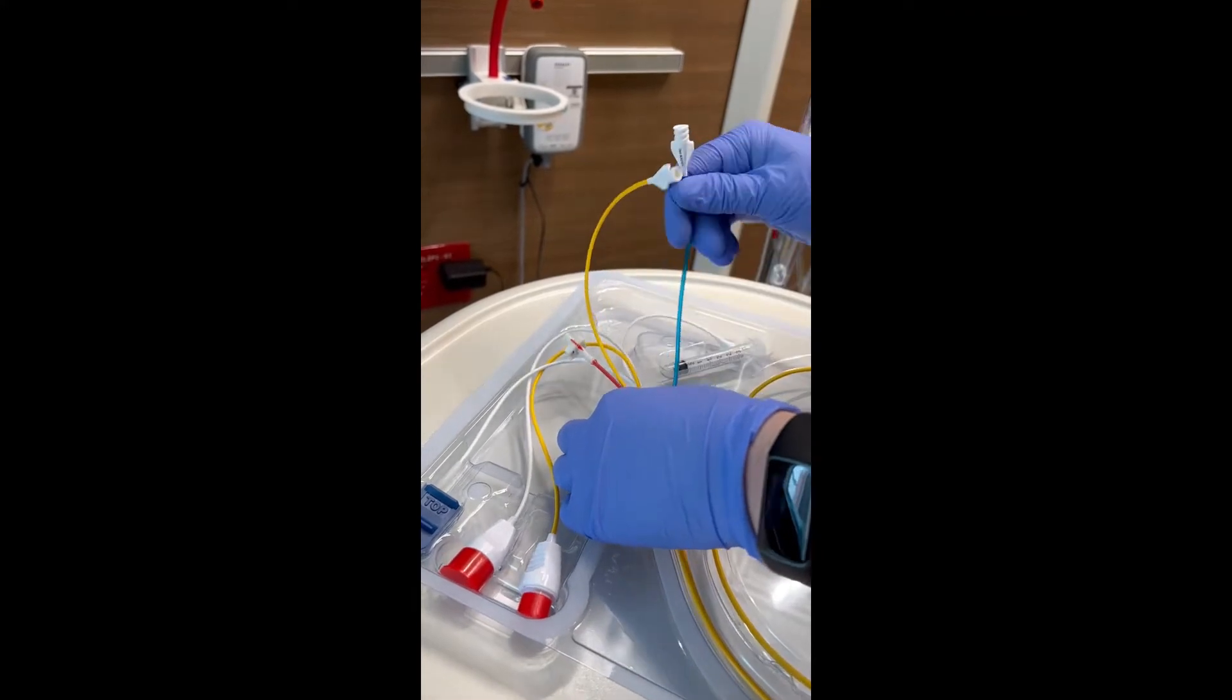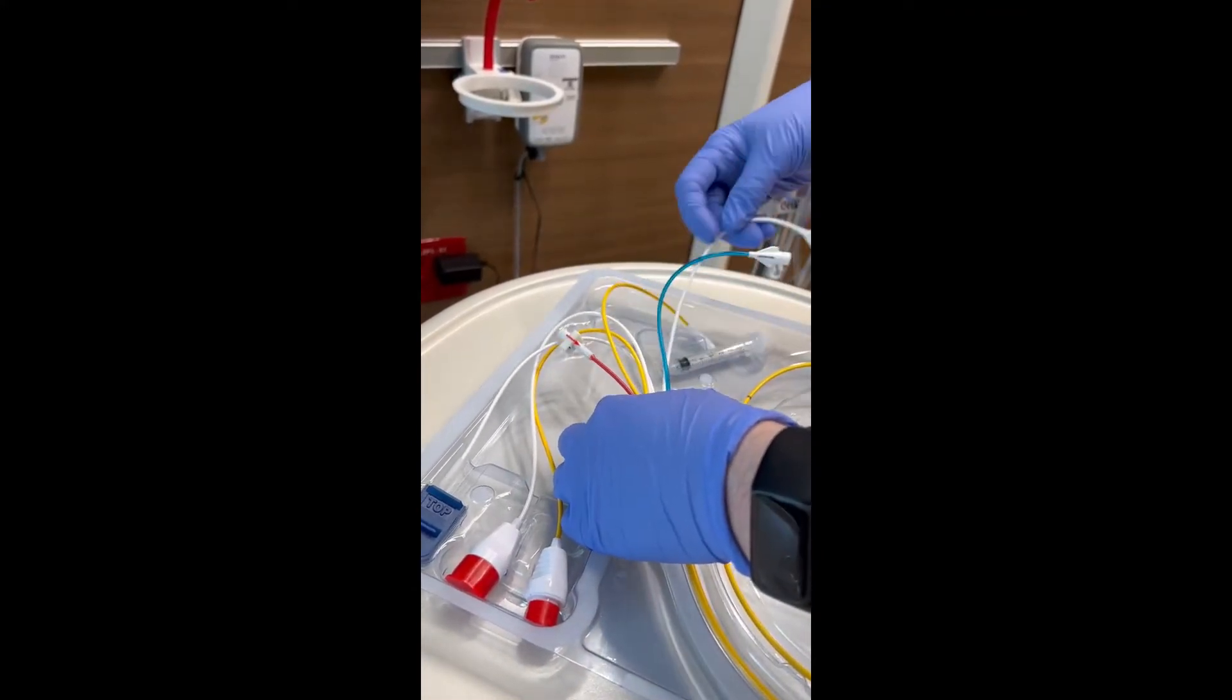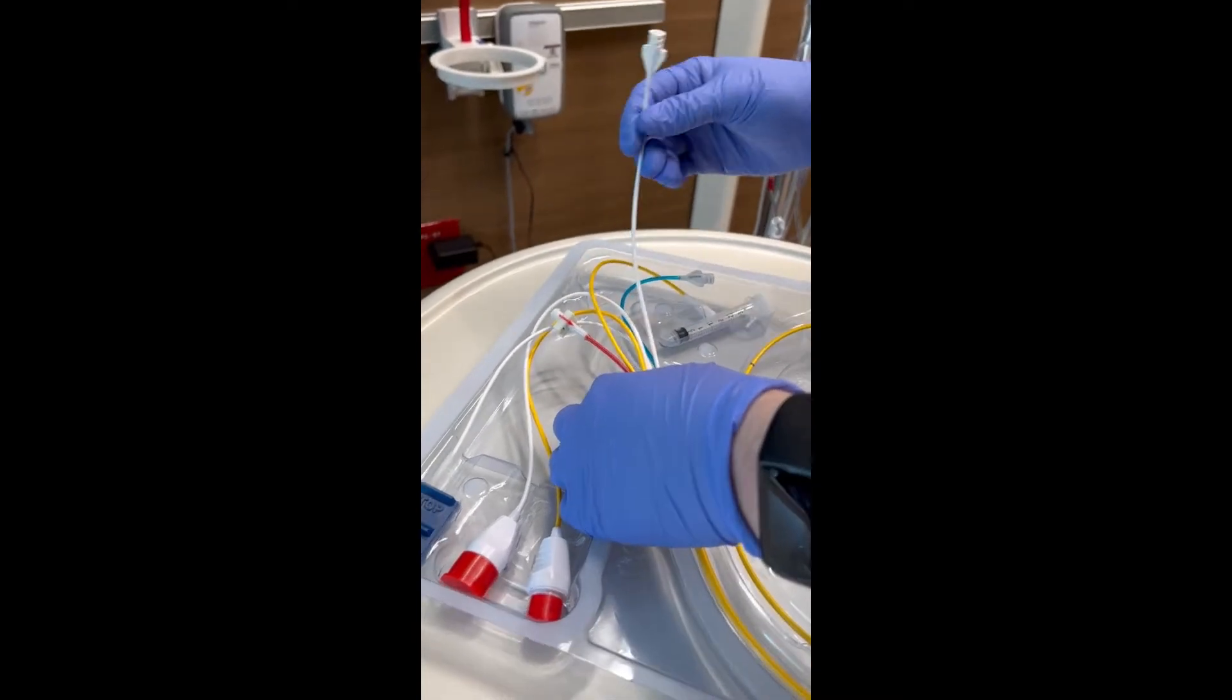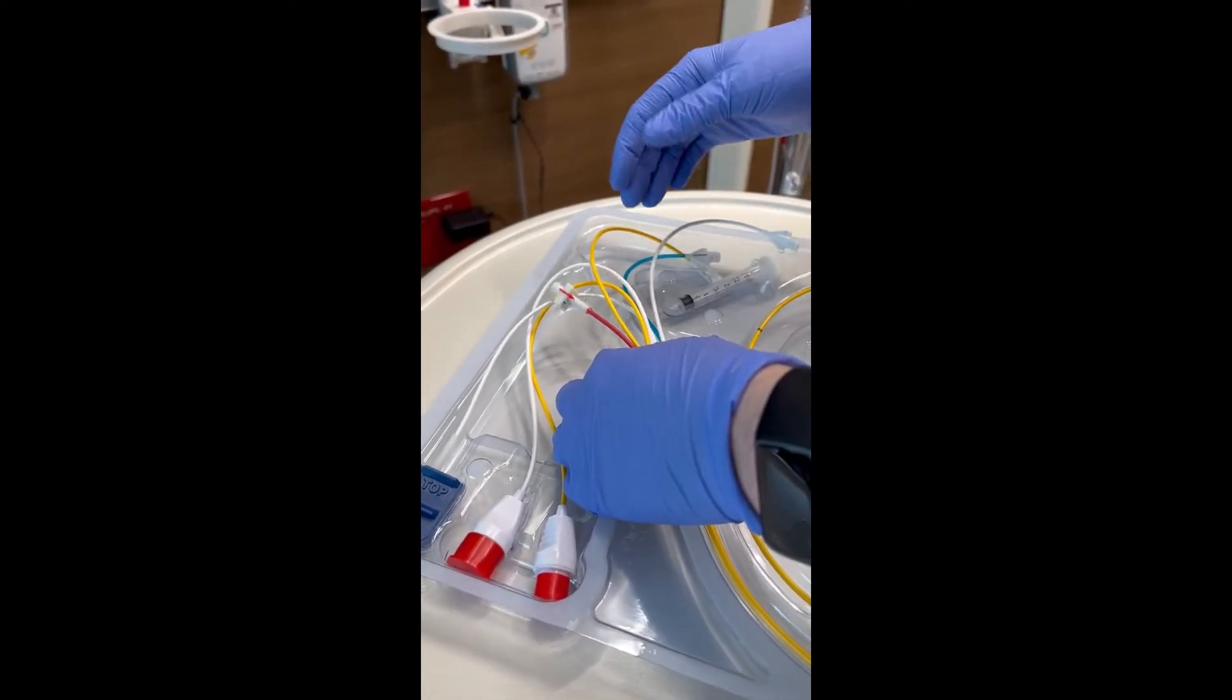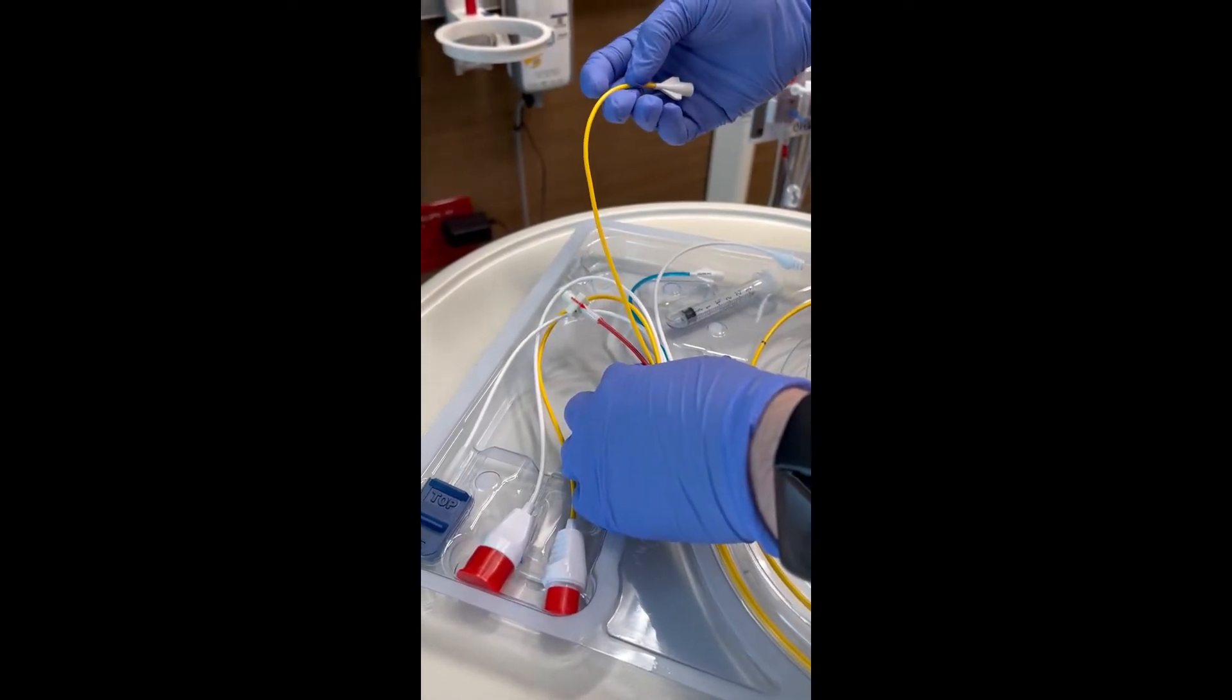Your blue is your CVP. This white one is an infusion port here, so you can hook your IV fluids or medications up to it. And then this yellow line is your PA catheter.